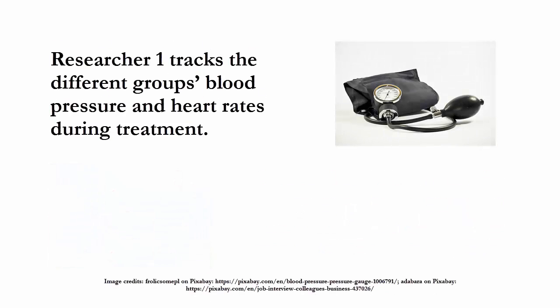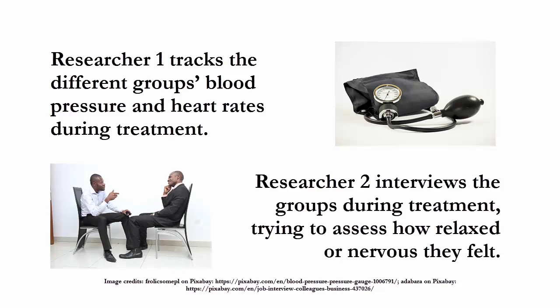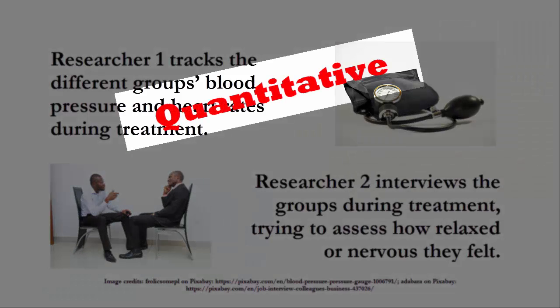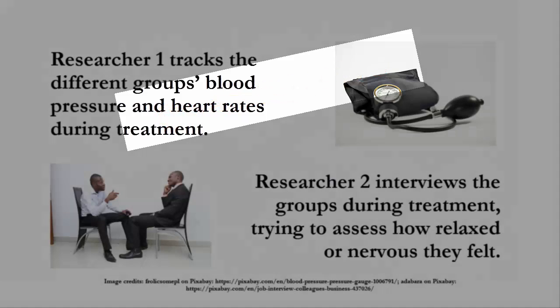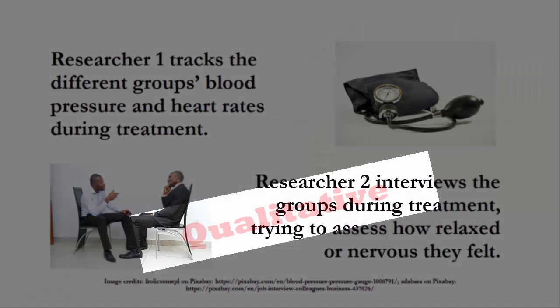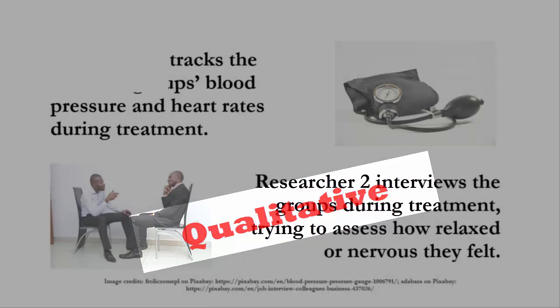If you said that researcher number one came away with quantitative results, you're correct. This researcher is looking at numbers — blood pressure and heart rates — and they're able to manipulate these figures using averages, graphs, and so forth to draw quantitative conclusions. Researcher number two, on the other hand, is using a more qualitative approach, using descriptors and a narrative format to draw conclusions.